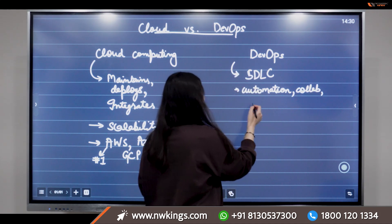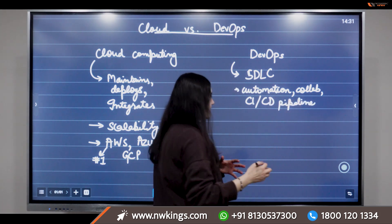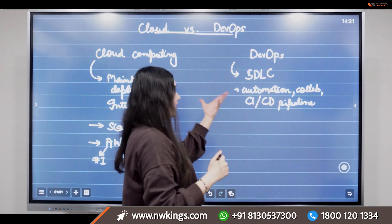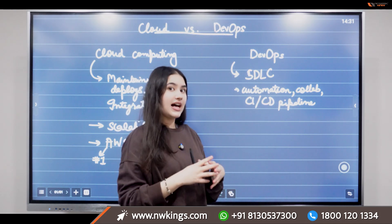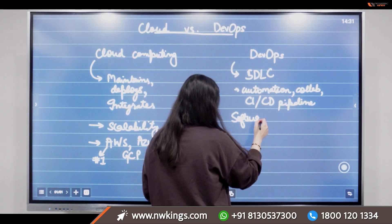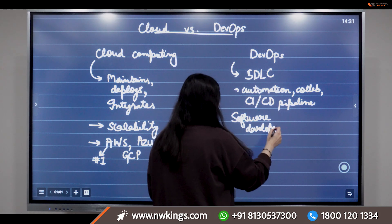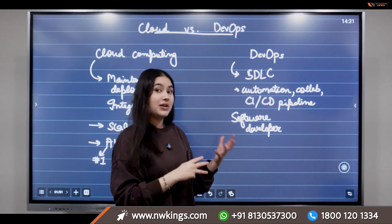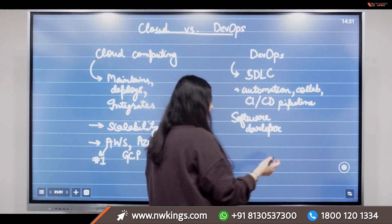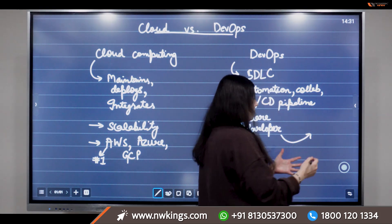The third key element is CI/CD pipelines — continuous integration and continuous delivery. A DevOps engineer acts as a bridge between software developers who are creating an application or software, building, staging, and testing it, and the operations team that takes it to the production level.